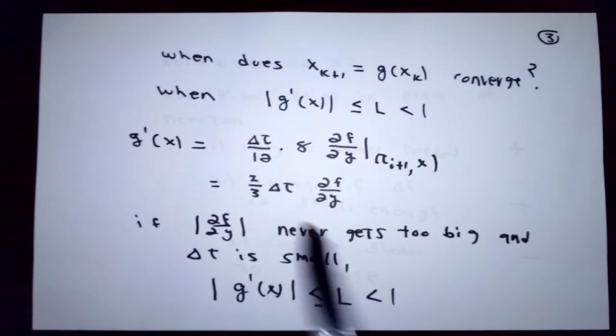If the partial of f with respect to y never gets very big—it's bounded, say—and Δt is small enough, then this number can be made as small as you'd like to make it. In particular, you can make it smaller than some number L which in turn is smaller than 1. This tells me that as long as the partial of f with respect to y isn't too badly behaved, then if I make Δt small enough this fixed point idea will work.